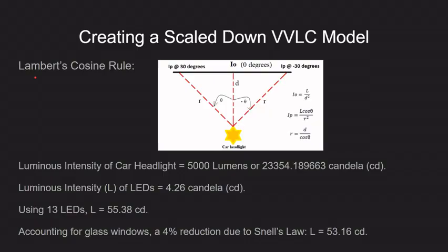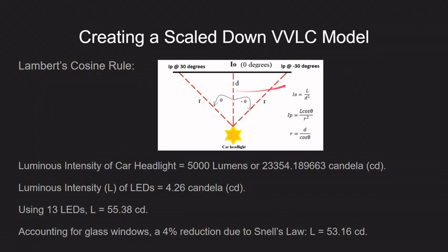A scaled model of a VVLC system was created using Lambert's cosine rule. This rule allows for the intensity of light to be calculated at different angles. Using Lambert's cosine rule, it was observed that the same luminance of a car headlight at 10 meters could be obtained with 13 LEDs at a distance of 47 centimeters.